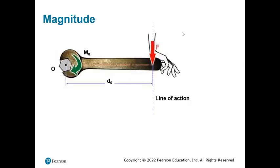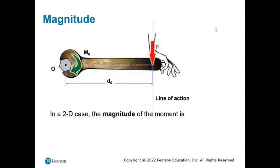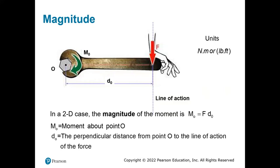The line of action is the line through which your force is acting. In the 2D case, the magnitude of the moment is defined as the force times the perpendicular distance D from point O to the line of action. The unit of moment is force times distance — Newton meters or pound-feet.